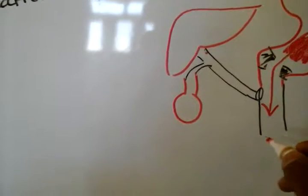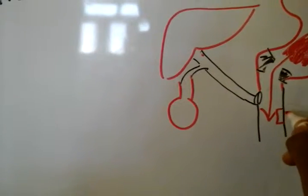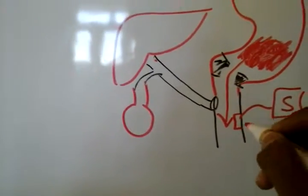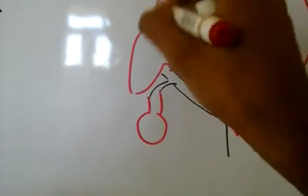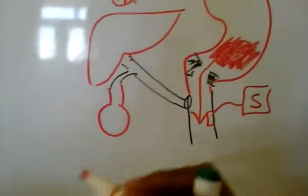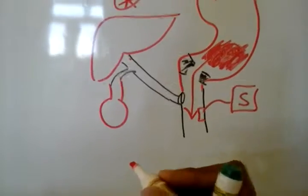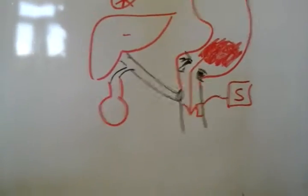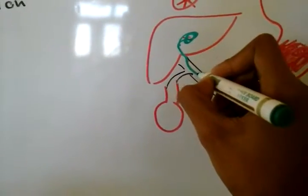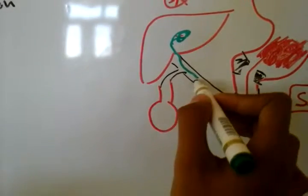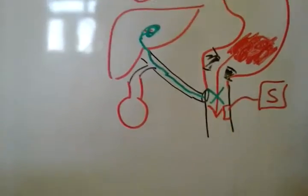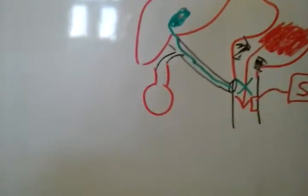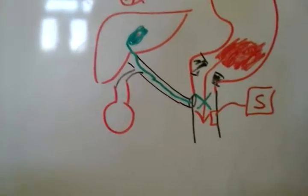The acid in the duodenum will stimulate the S-cells, which produce secretin hormone. Secretin hormone goes to the liver, asking it to produce some alkaline bile. The liver starts to produce bile, which goes through the hepatic duct and is released via the common bile duct. So the first function is neutralization of the acidity of the chyme.